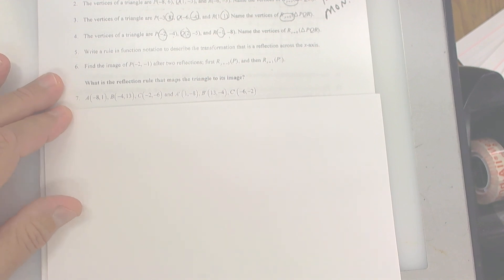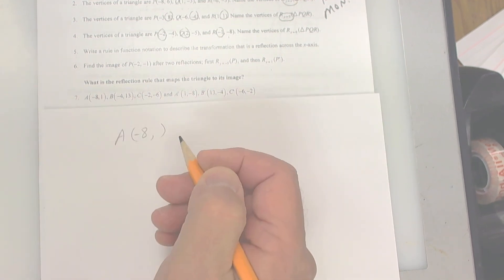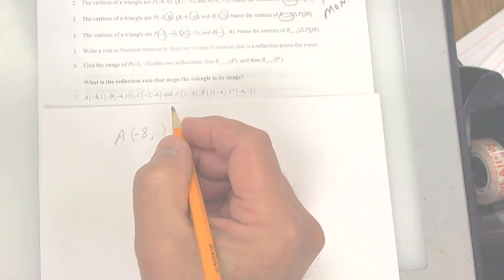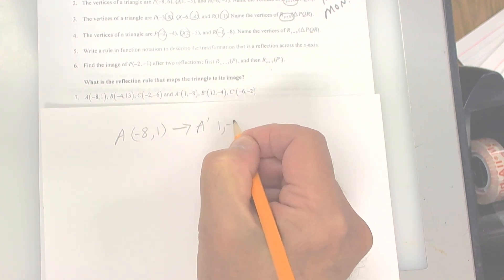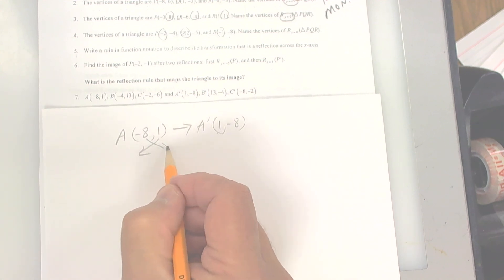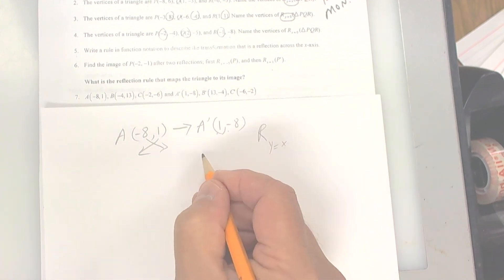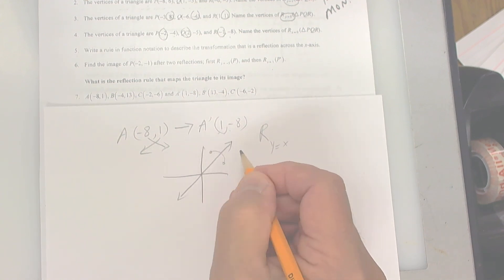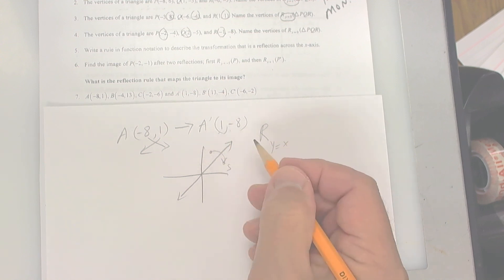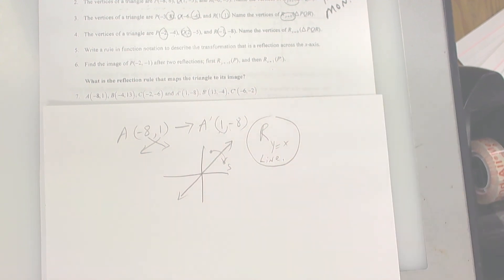Number 7: what is the reflection rule that maps this? Point A is negative 8 and 1, and A prime is 1 and negative 8. They switched them — moved 1 to the front and negative 8 to the back. So that would be a reflection over y equals x, the 45-degree angle. In order to go from here over to here, you switch the coordinates. That's the rule: a reflection over the line y equals x.